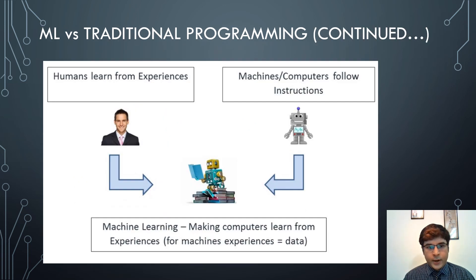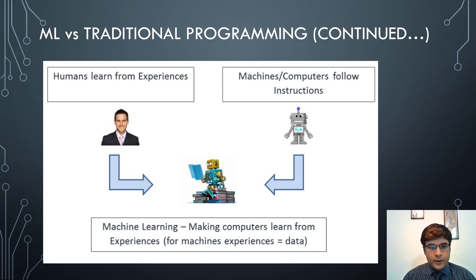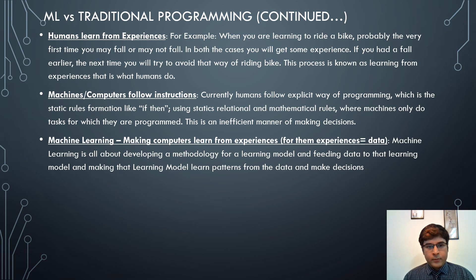Continuing from the previous slide, humans learn from experiences while computers traditionally follow instructions. But machine learning makes computers learn from experiences — and for machines, experiences equal data. For example, if you are riding a bike and you fall down, you gain experience and try not to ride the bike that way again. This process is learning from experiences, which is what humans do.